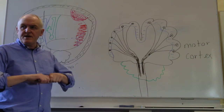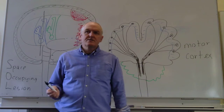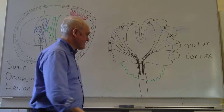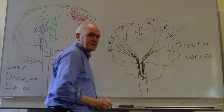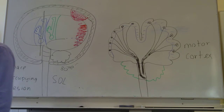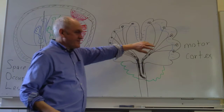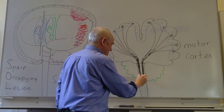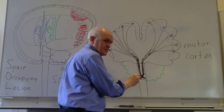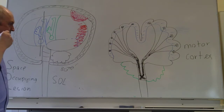Then something really strange and mysterious happens. All this bundle of motor nerve fibres from the right side decides to cross over to the left. The entire bundle, at the level of the medulla oblongata, goes over to the left-hand side. At the same time, the bundle from the left-hand side crosses over to the right-hand side. No one really knows why this happens.